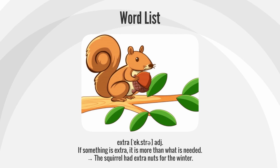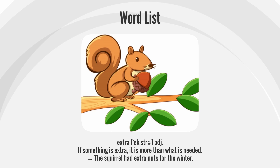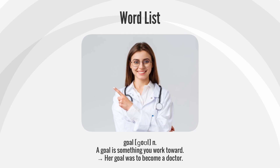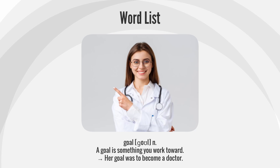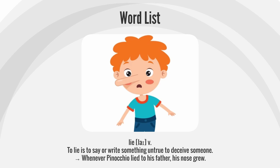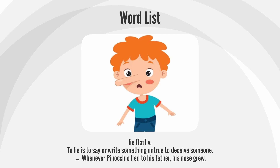Extra: If something is extra, it is more than what is needed. The squirrel had extra nuts for the winter. Goal: A goal is something you work toward. Her goal was to become a doctor. Lie: To lie is to say or write something untrue to deceive someone. Whenever Pinocchio lied to his father, his nose grew.